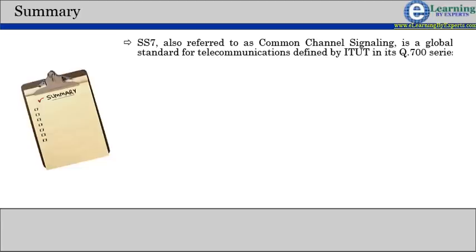SS7 is also referred to as common channel signaling or CCS due to its hard separation of signaling in bearer channels.